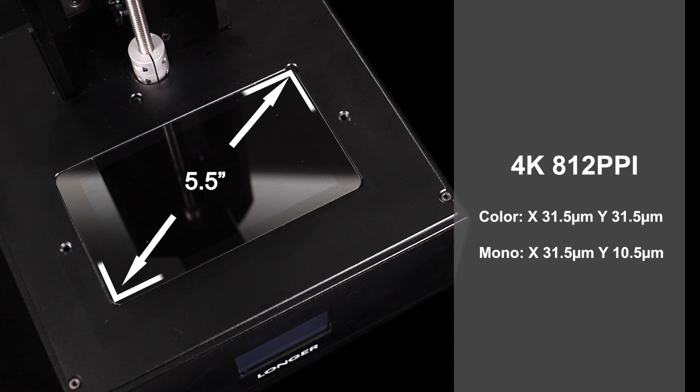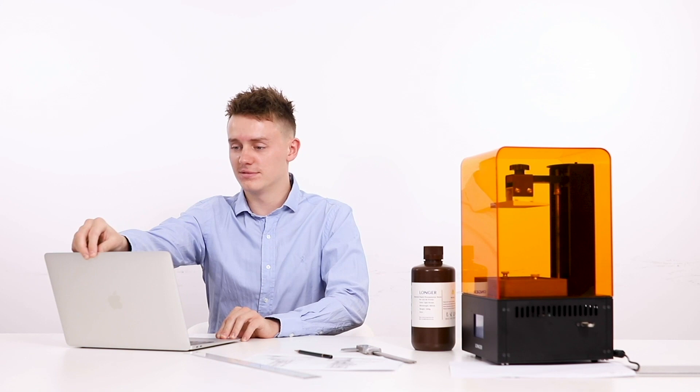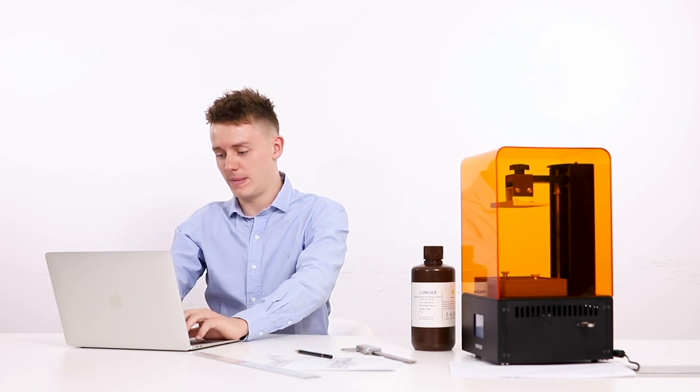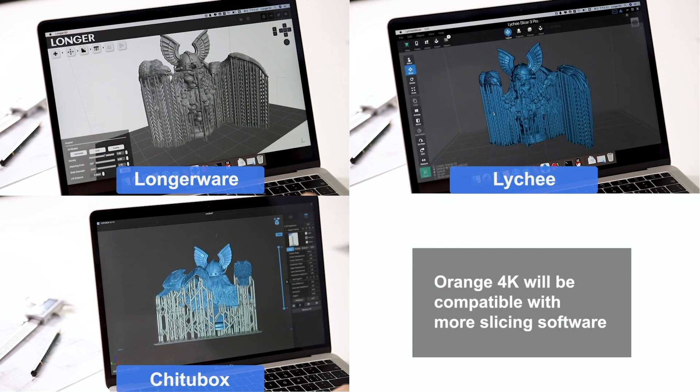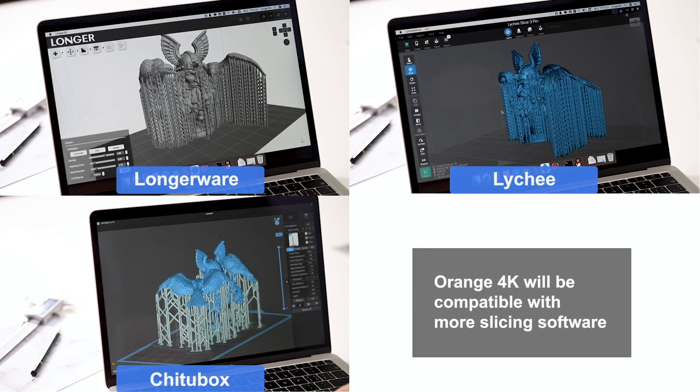Color and mono screens are both available. After you check the design file, you can export the STL file into slicing software. Lychee Slicer, ChituBox, and Litchi are all supported by Orange 4K for slicing.